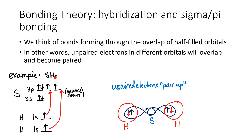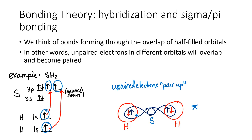We have an example here with SH2, where you can see that sulfur has two unpaired electrons and each hydrogen has one unpaired electron. Each of those unpaired electrons are spots where bonds can form, where these orbitals that are only half-filled can fill up and become filled orbitals. We can see a P orbital from S — remember these P orbitals are dumbbell shaped — overlapping with an S orbital from hydrogen, which is kind of a spherical shape. When they overlap, we now have a filled orbital, and those two shared electrons we call a covalent bond.